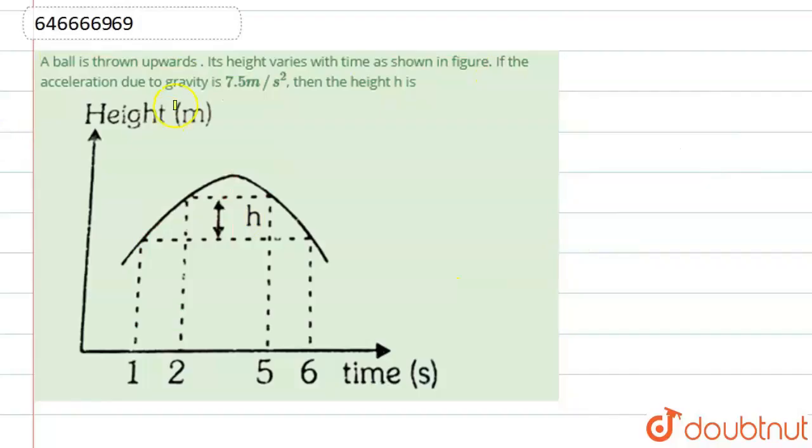Hello students, now we are going to see this question. The question says that a ball is thrown upwards. The height varies with time as shown in figure. If the acceleration due to gravity is 7.5 meter per second square, then the height h... So we need to find basically this height.